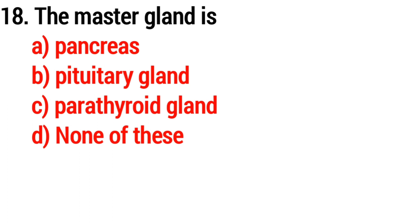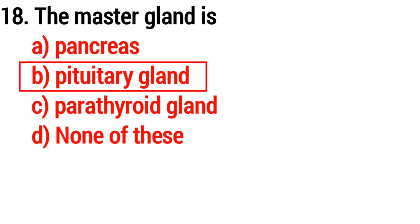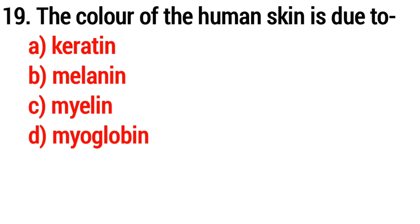Question number eighteen: the master gland is? Answer option B — pituitary gland. Question number nineteen: the color of human skin is due to? Answer option B — melanin.